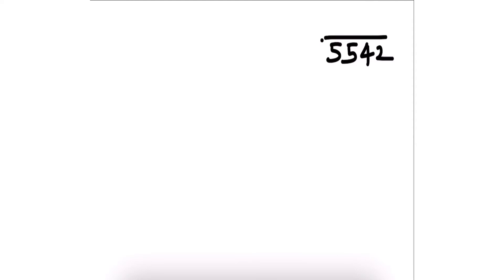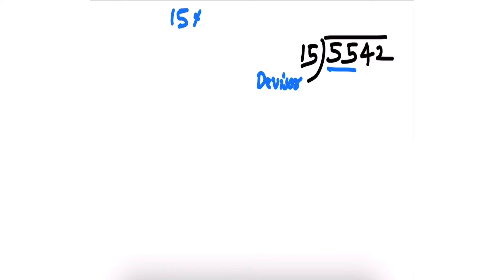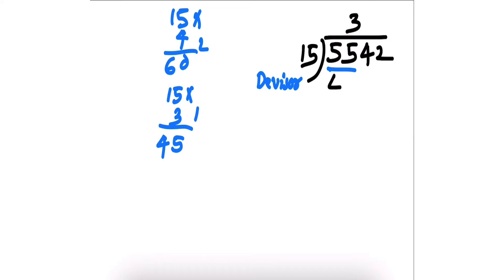Now let's try 5542 divided by 15. This time the divisor is a 2-digit number. Since 5 is less than 15, consider 55. For 55 divided by 15, we don't have the multiplication table of 15, so try nearby multiplications: 15×4=60, which is more than 55. Take the previous: 15×3=45. Write 3 in the quotient. Subtract 45 from 55 — we get 10.